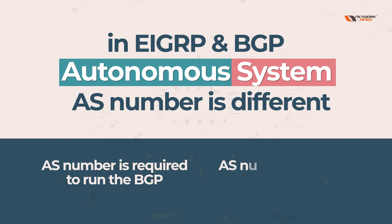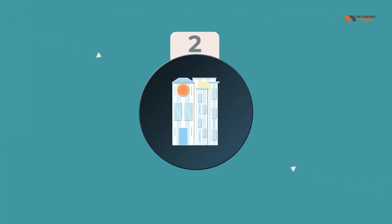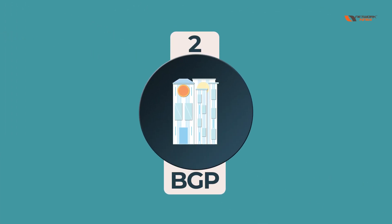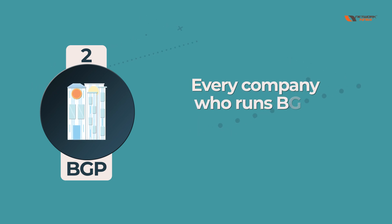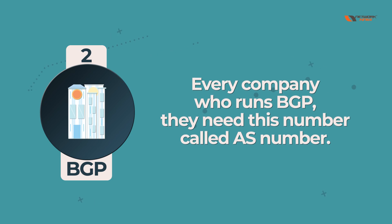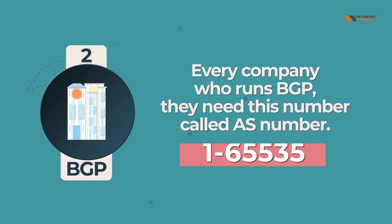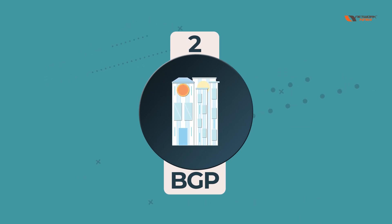There is no real significance of the AS number in EIGRP. So why do we need an AS number? Because every company that runs BGP needs this number called an AS number — it ranges from 1 to 65535. The companies who run BGP each have one of these numbers.